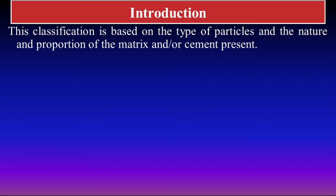The classification is based on three main components. The first one is particles, the second is the nature of these particles, and the third is the proportion of material — the material may be matrix or cement.